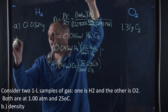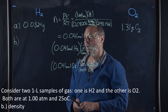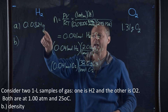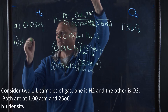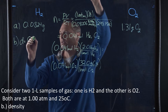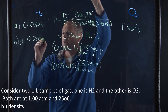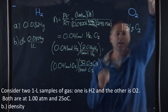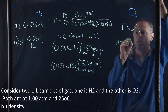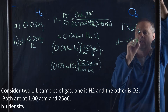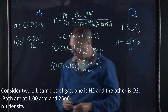For part B, it asks us for the density. The density is quite simple because we have the mass and we know the volume is 1 liter. So the density for hydrogen is 0.0824 grams per 1 liter, and likewise the density for oxygen is 1.31 grams per 1 liter.